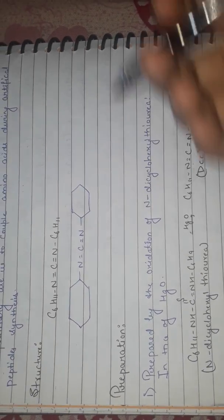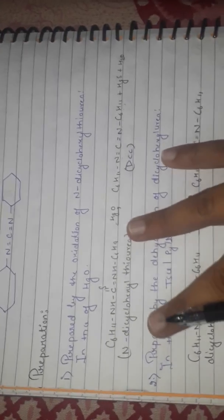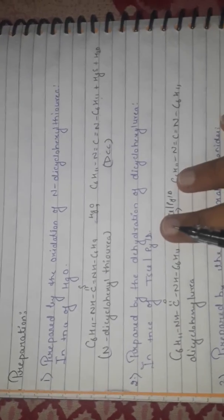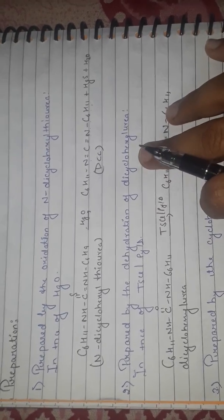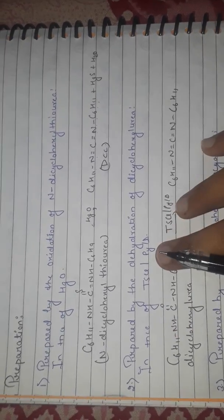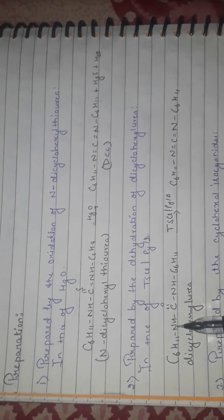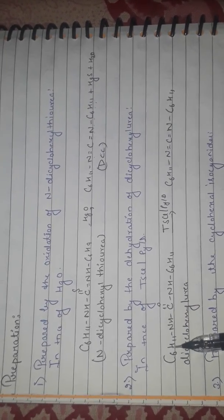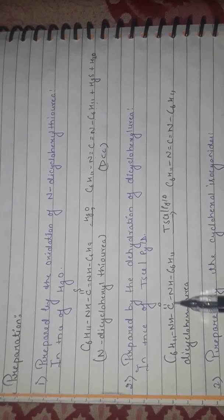The second preparation is by dehydration of dicyclohexyl urea (C6H11-NH-C(=O)-NH-C6H11) in the presence of tosyl chloride (TsCl) and pyridine to give DCC directly.